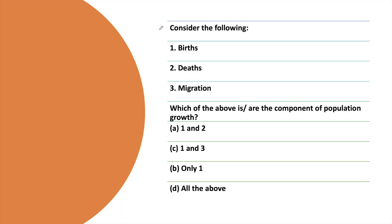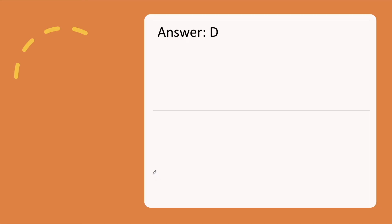The next question: Consider the following. Which of the above are the components of population growth? Please attempt the question carefully and then check it. The correct answer is option D.